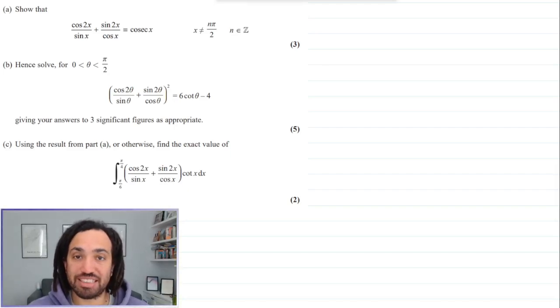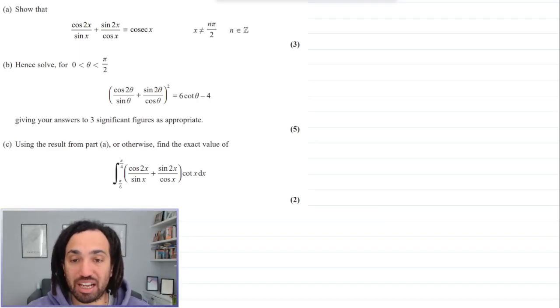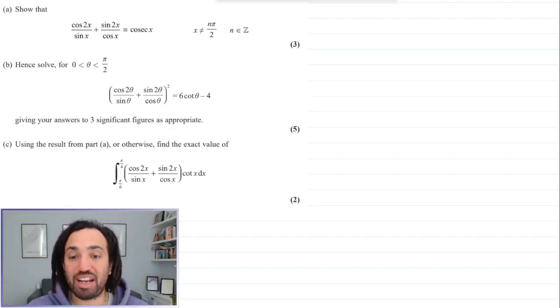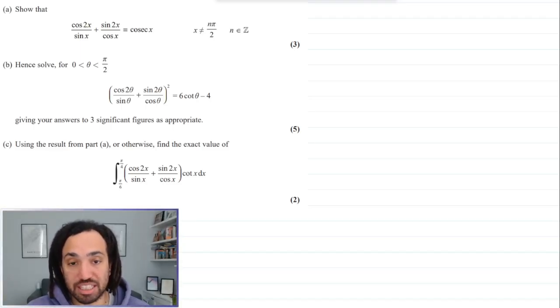Hello, my name is Mr. Asbury and this is another tricky maths question. This one looks super tricky. We've got an identity followed by an equation to solve followed by an integral to do. So the reason why I picked this one is because I believe that a trigonometric identity followed by a tricky equation is the most common topic.